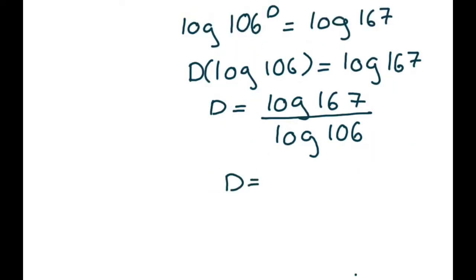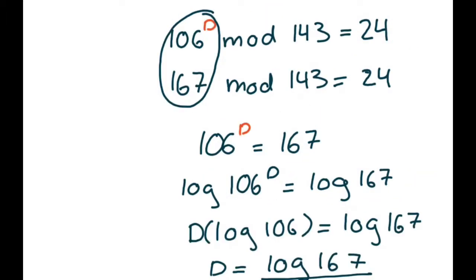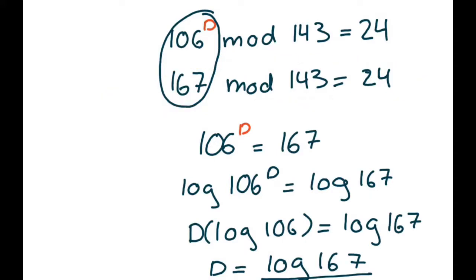If I get a calculator out and solve for this, I'm going to get a value of 1.0974... as my result for d — a decimal. However, d has the restriction that it must be an integer value, which this value is not. But that doesn't mean the message interceptor has to disregard this method. It's important to note that 167 divided by 143 is not the only modular relationship that's going to yield 24 as a remainder — there are other modular relationships that can yield 24 as a remainder.